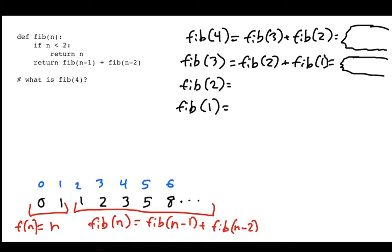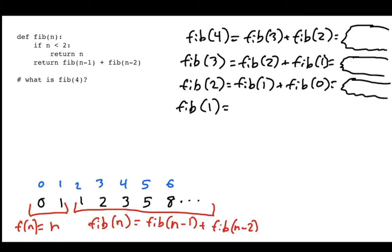Fibonacci of 2: I haven't hit my base case yet, so here I'm going to get Fibonacci of position 1 plus Fibonacci of position 0, which equals something. I already have Fibonacci of 1 on the board, but I need to add Fibonacci of 0. It turns out these last two problems are both my base case — both numbers are less than 2. So Fibonacci of 1 is 1, and Fibonacci of 0 is 0.